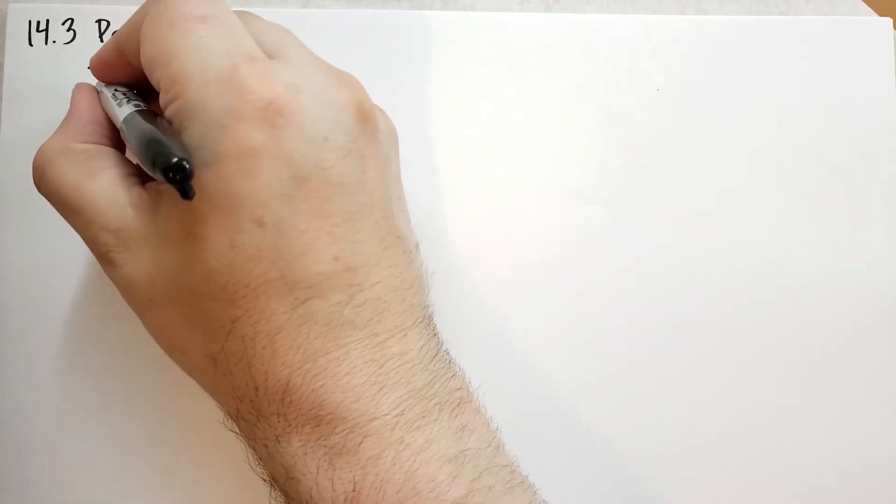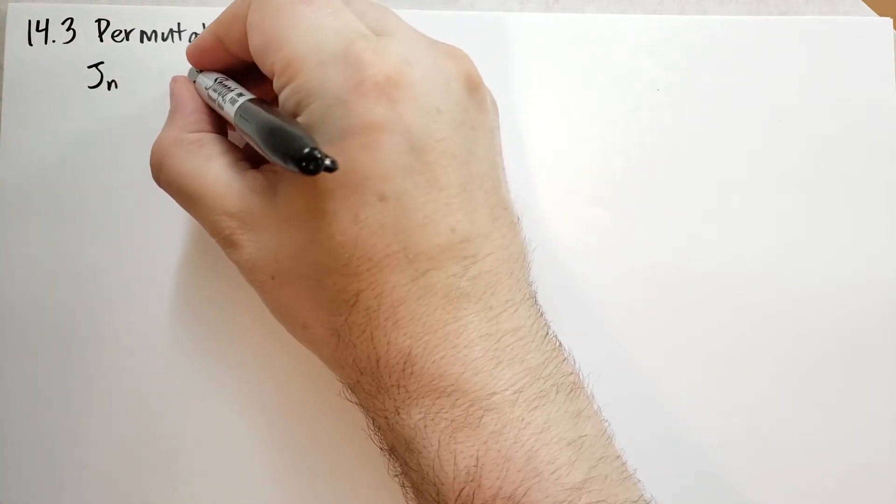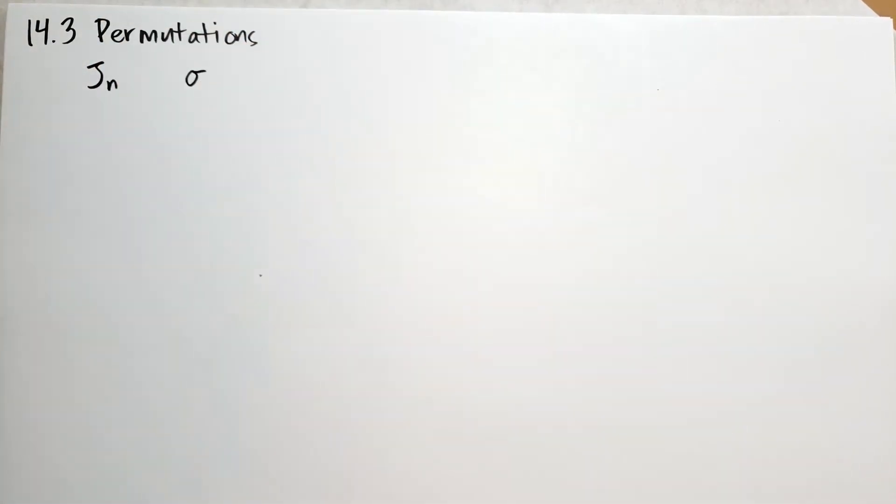Let's continue our lecture on section 14.3 of Sergey Lang's Basic Mathematics by talking about transpositions. To review, we're talking about the sets of integers between 1 and n, we call that J_n, and we have the mappings called sigma that are permutations transforming each number in n to another number, where two numbers are not the same. Now we're going to introduce Theorem 1, but let's first talk about what a transposition is before we do that.